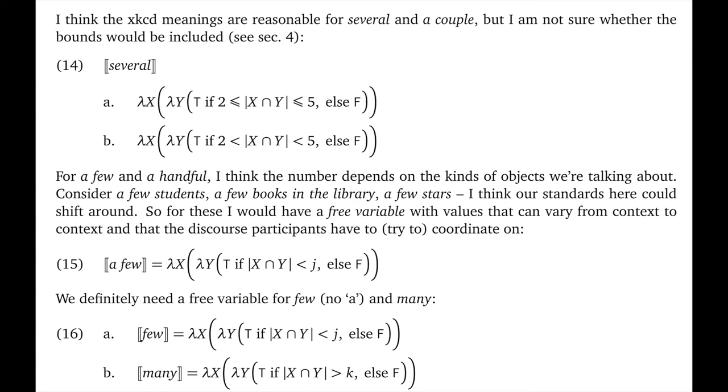I suspect that the overall size and makeup of the domain matter somewhat for them. So consider how you might use phrases like a few students, a few books in the library, a few stars in the sky. I think five may be reasonable for students, but not for books if the library is large and almost certainly not for stars in the sky. And even if a few really is not so sensitive to the domain in the way that XKCD suggests, I'm sure that few is where we don't include the determiner a. I think the meaning of few in 16a is the core of it, and I've given it sort of dual many in 16b.